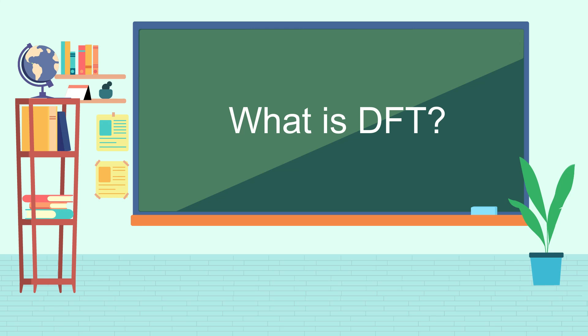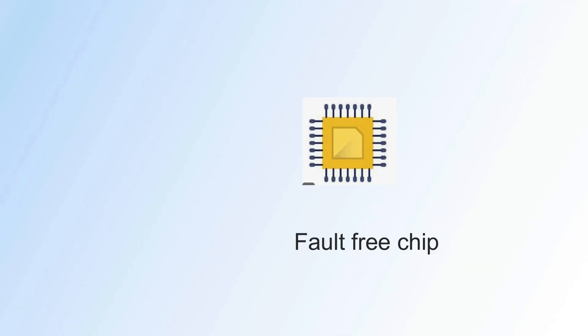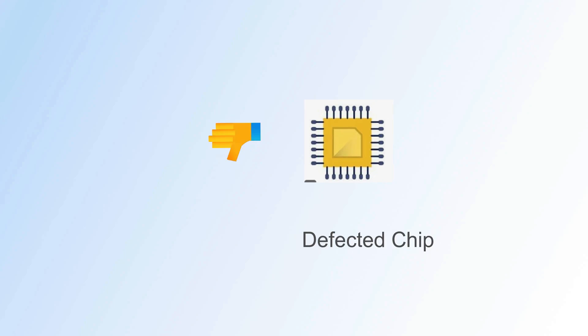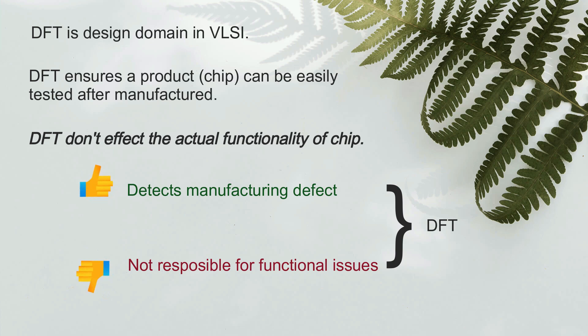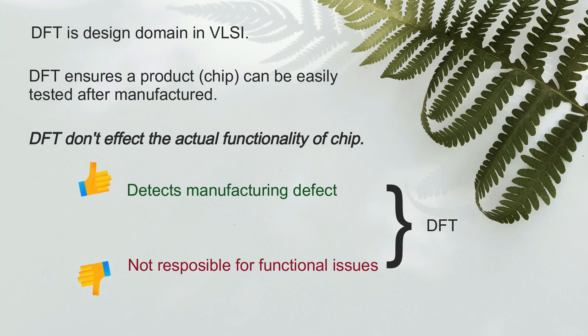What is DFT? Design for test is a method which ensures that a chip can be easily tested after manufacturing. With the help of DFT, we can tell whether a chip is fault-free or has some defects. As the name suggests, we are designing something so that it can be tested — that's why the name design for test. Most people confuse DFT as a testing domain, but it's actually a design domain. We are designing something on a chip, without affecting its functionality, so that its faults can be tested.